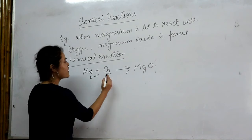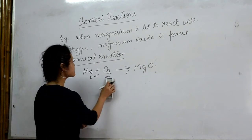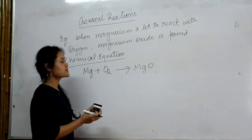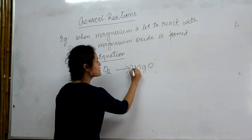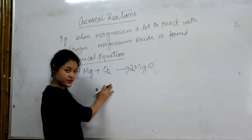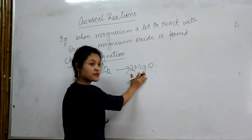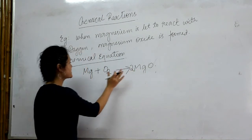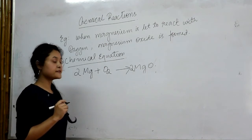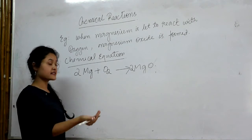I will balance this equation by hit and try. We balance first the element with the highest number of atoms. Oxygen has the highest number of atoms, that is two, so we balance for oxygen first. In the reactant side, oxygen has two atoms, and we add a coefficient of two on the product side so oxygen becomes two — now oxygen is balanced. But then magnesium on the product side becomes two, while on the reactant side there is only one, so we add one more magnesium to balance it.